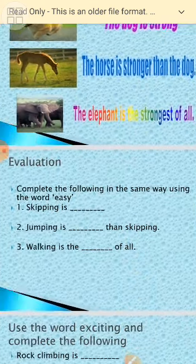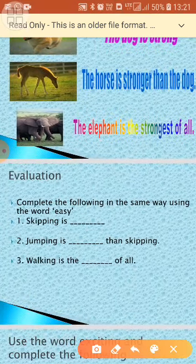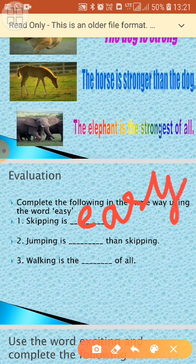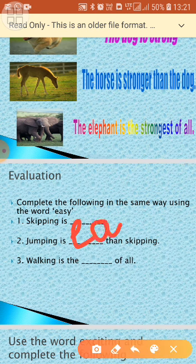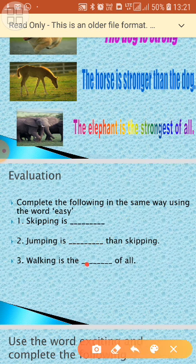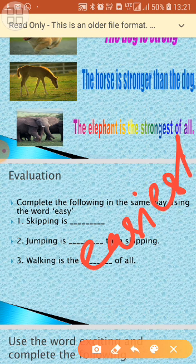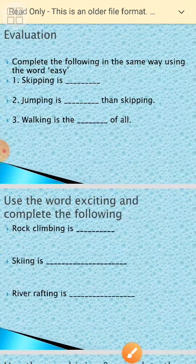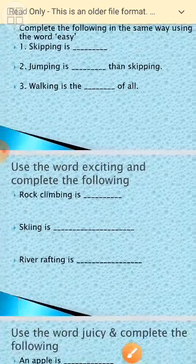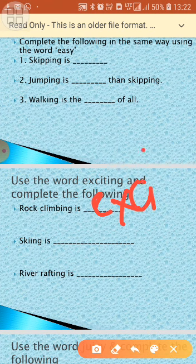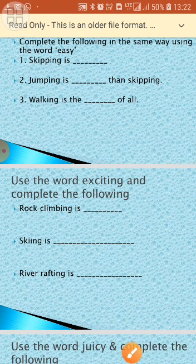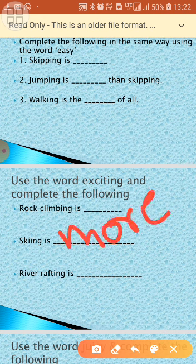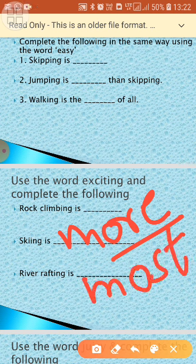Next example uses the word 'easy': 'Skipping is easy. Jumping is easier than skipping. Walking is the easiest of all.' Then using the word 'exciting': 'Rock climbing is exciting. Rock climbing is more exciting. River rafting is the most exciting.' Here we use 'more' and 'most' instead of 'er' and 'est.'